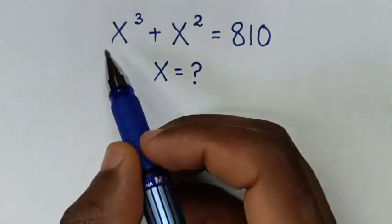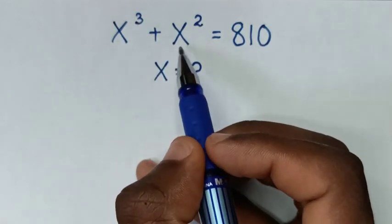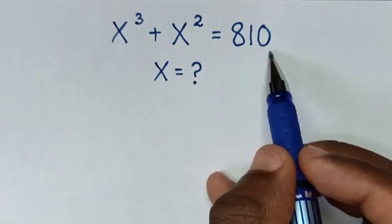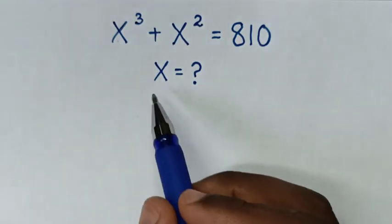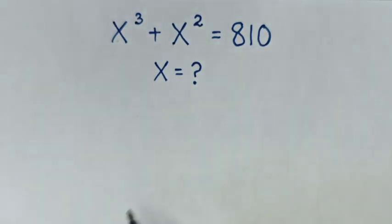Hello. How to solve x³ + x² = 810, to find the values of x from this equation.